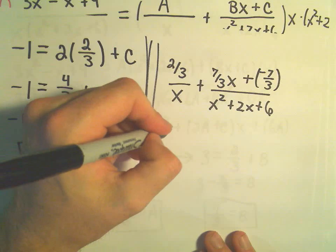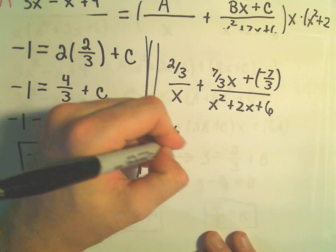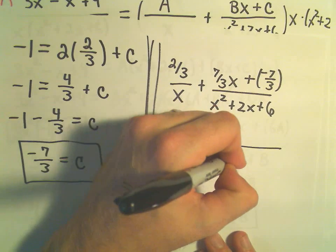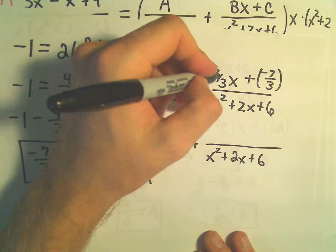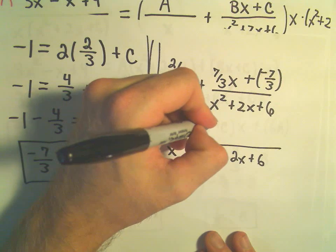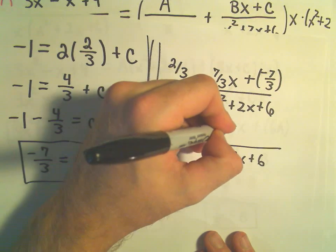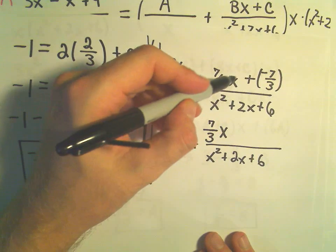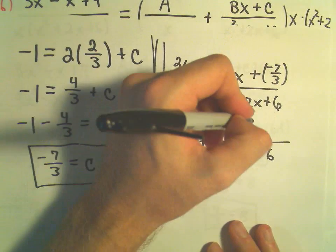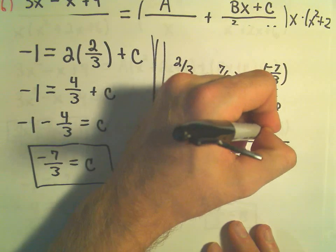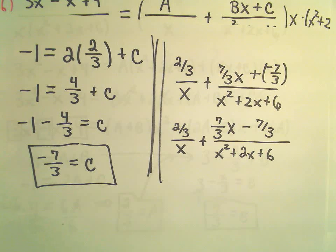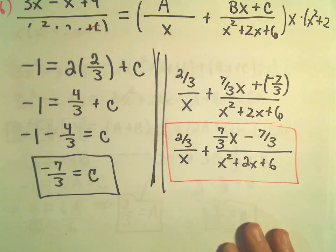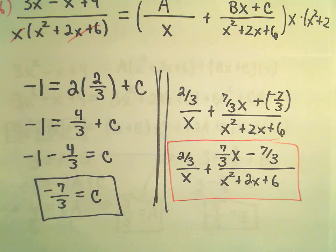So I'm going to rewrite this one more time. I'm going to leave the 2/3 over x like it is. The denominator, I'm going to leave that alone. x² + 2x + 6. This looks a little sloppy to me. I would be kind of picky about that in a class. I'm going to write 7/3 times x. You know, make it completely clear that this x isn't in the denominator. Plus a negative 7/3. We can just write that as minus 7/3. And to me, this would now be our partial fraction decomposition of that very original expression that we started with.